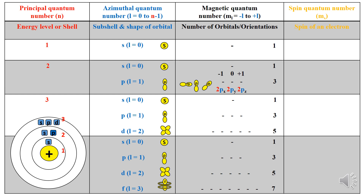The magnetic quantum number is represented by M sub L, with values ranging from −L to +L including 0. The magnetic quantum number determines the number of orbitals and specifies the orientation of orbitals in different directions in space. For example, in a p subshell, M sub L can take values of −1, 0 and +1, corresponding to the 2px, 2py and 2pz orbitals.